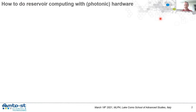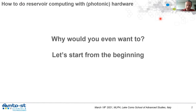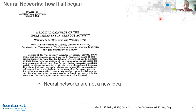The first question is: why would you even want to do reservoir computing or neural networks in photonic or general hardware when you can just use MATLAB? I want to start from the beginning. The whole neural network activity is not a new idea — it's from the 1940s. The first motivation was to provide what the authors called a logical calculus of the ideas immanent in nervous activity. It was not thought about as a computing concept at all — it was just to make sense of how the thinking process is based on nervous activity in the brain.